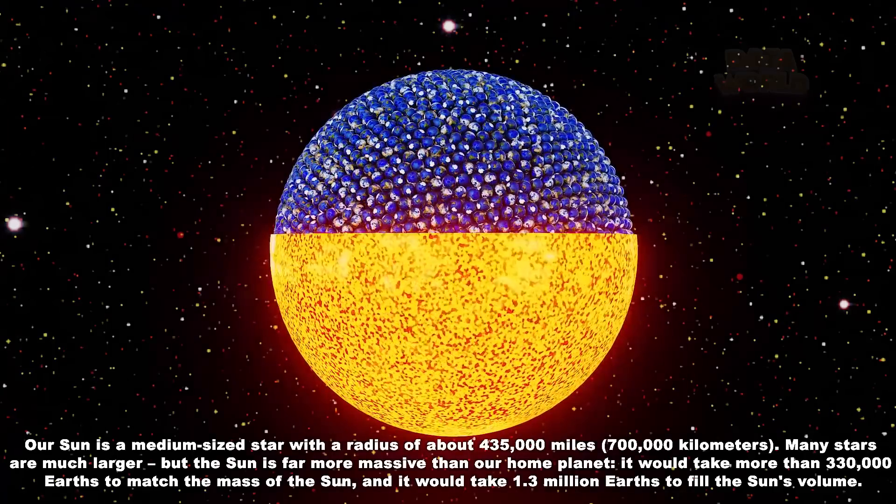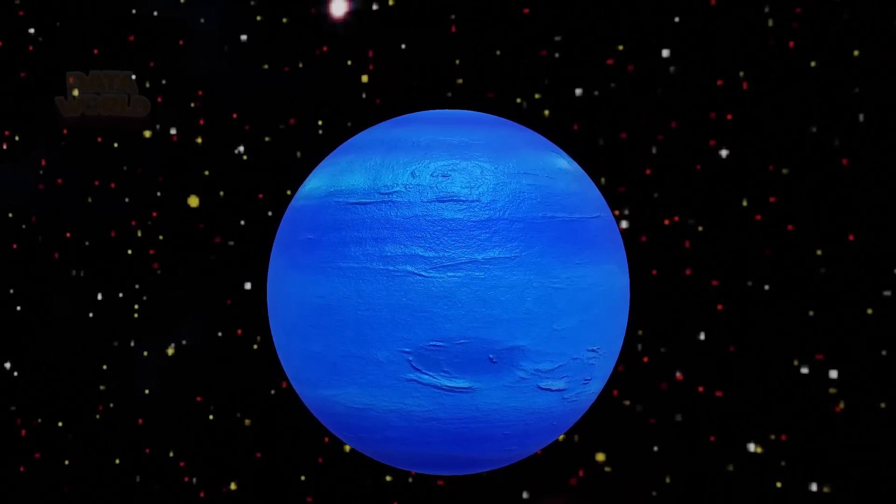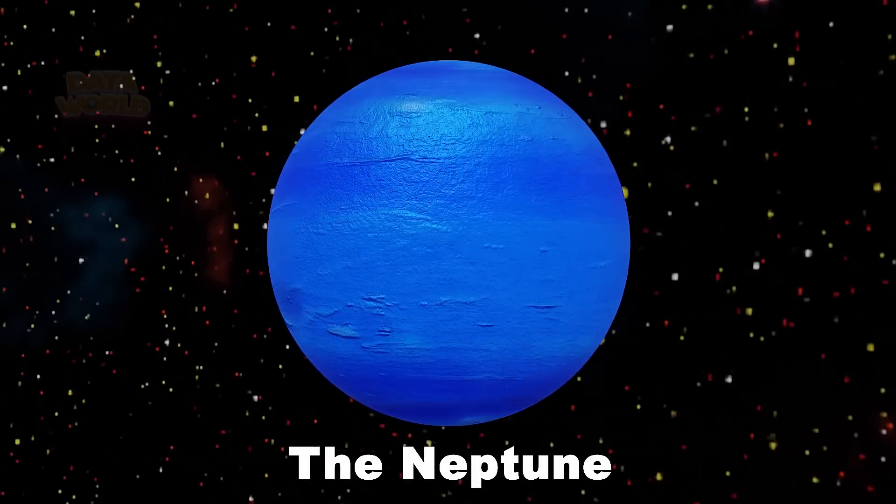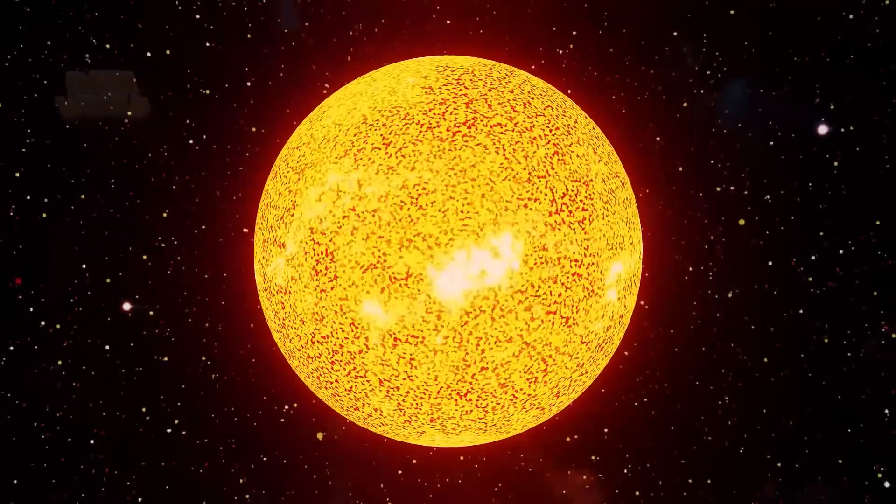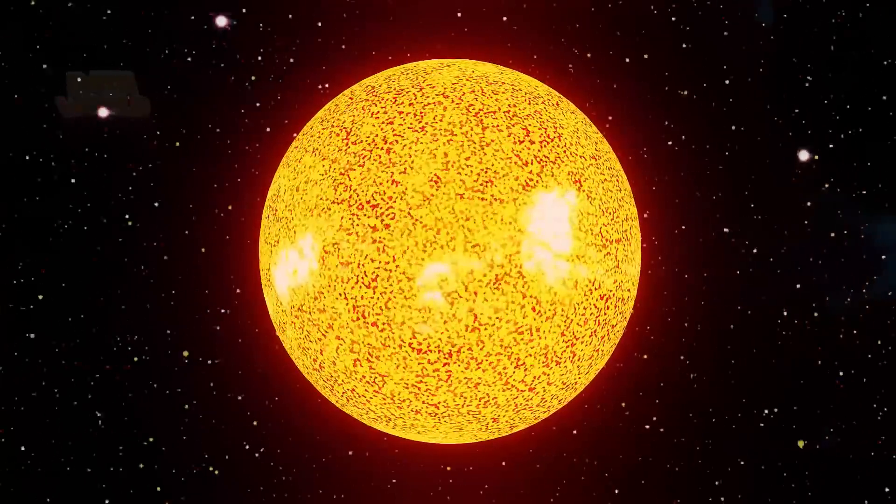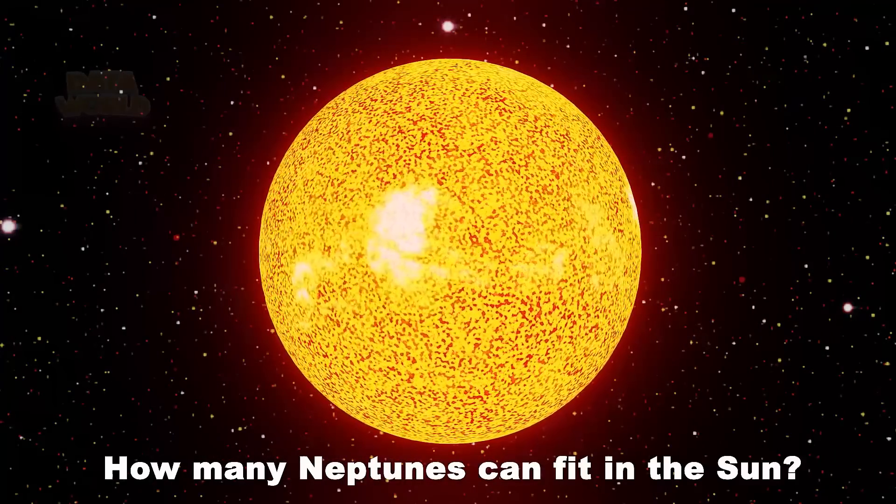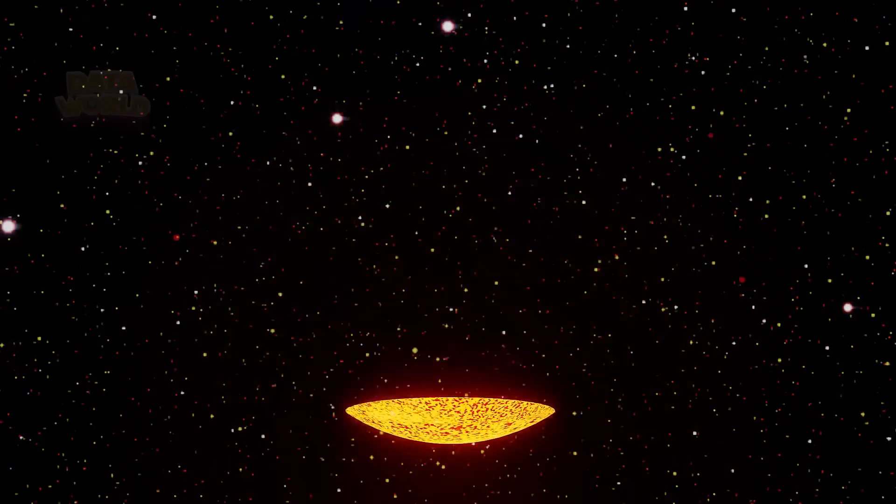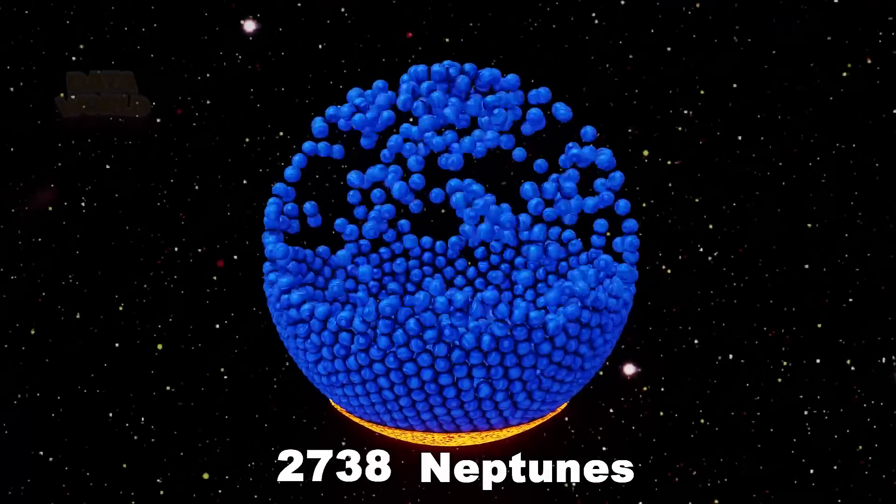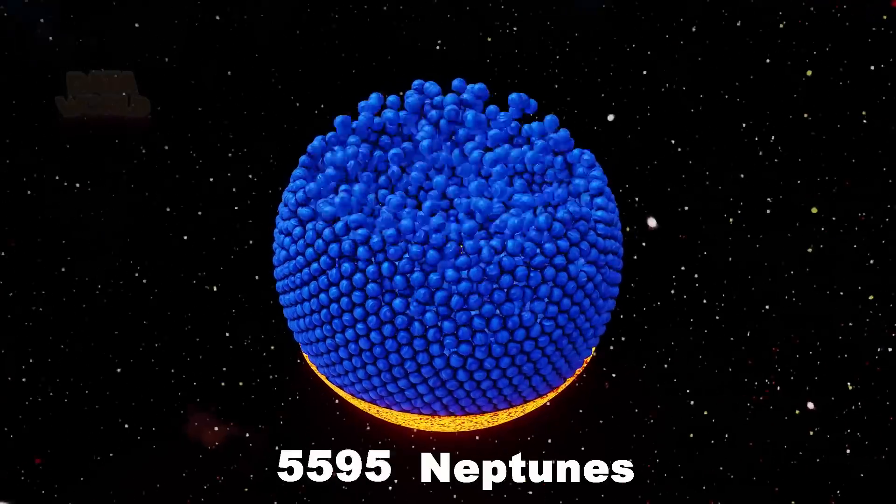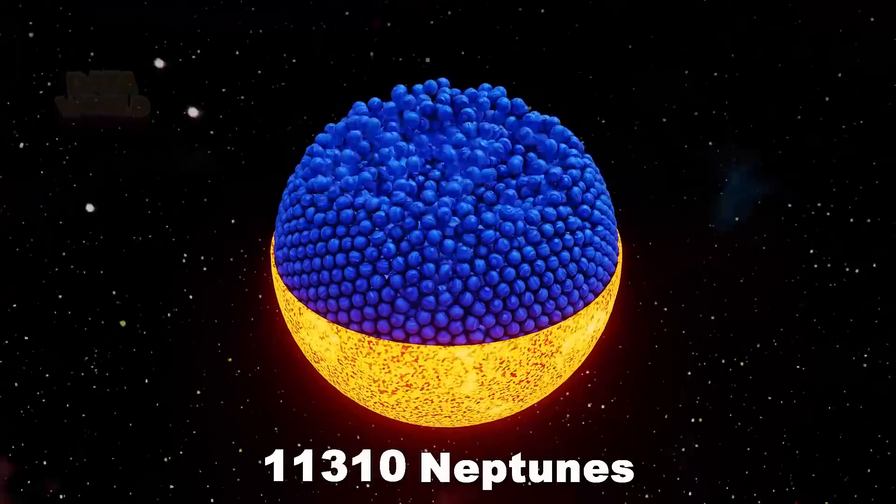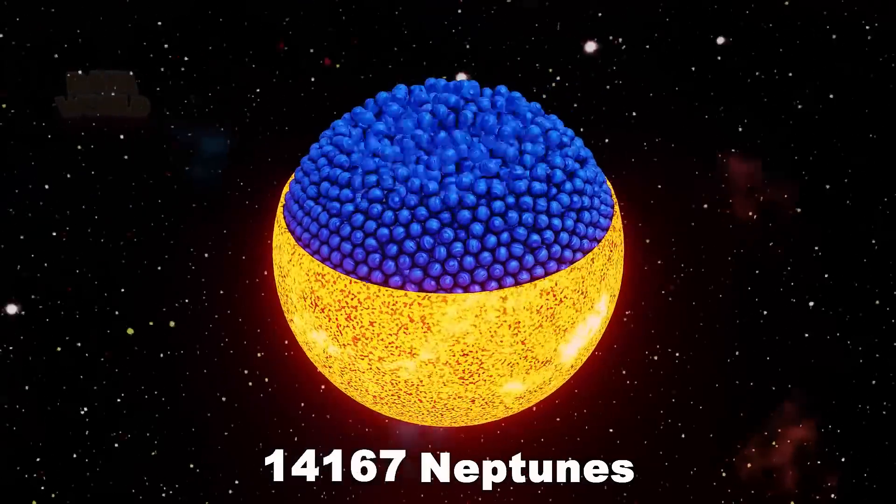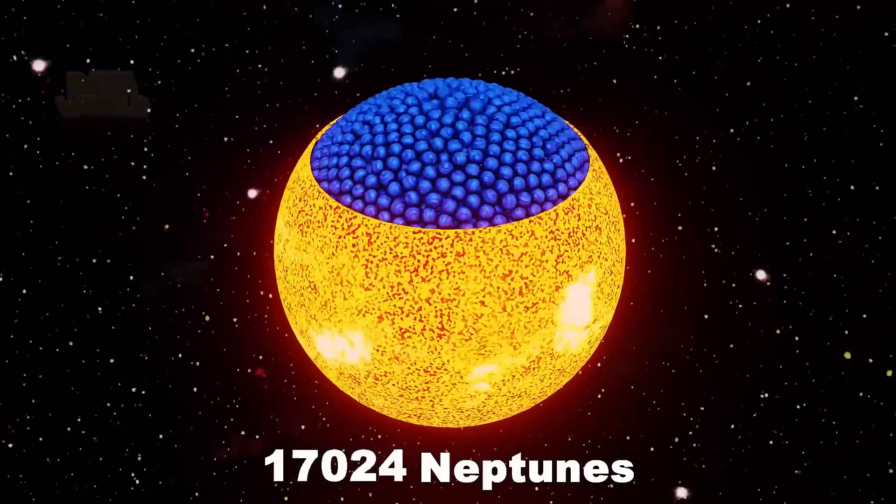And it would take 1.3 million Earths to fill the Sun's volume. How many Neptunes can fit in the Sun?